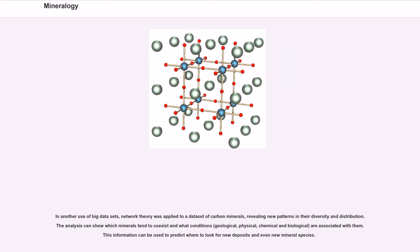In another use of big datasets, network theory was applied to a dataset of carbon minerals, revealing new patterns in their diversity and distribution. The analysis can show which minerals tend to coexist and what conditions — geological, physical, chemical, and biological — are associated with them. This information can be used to predict where to look for new deposits and even new mineral species.